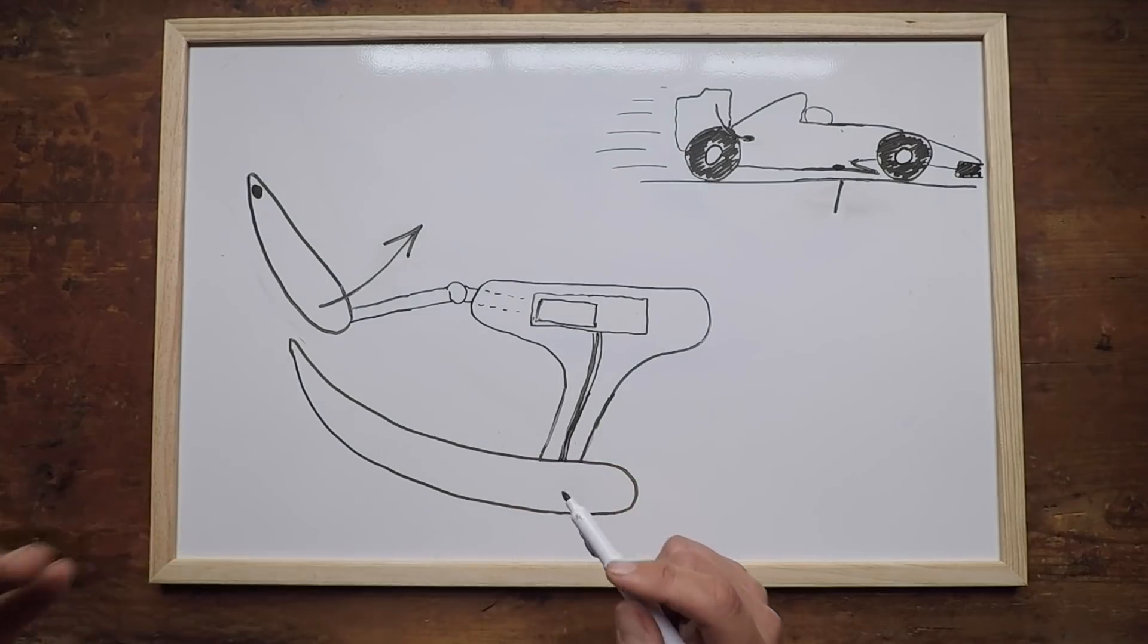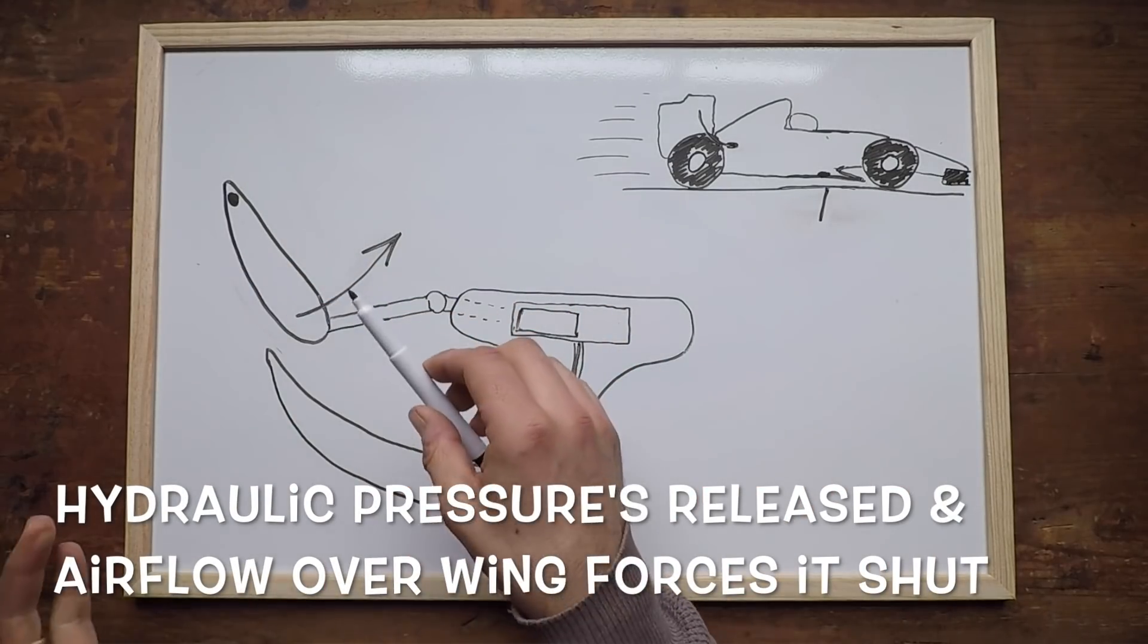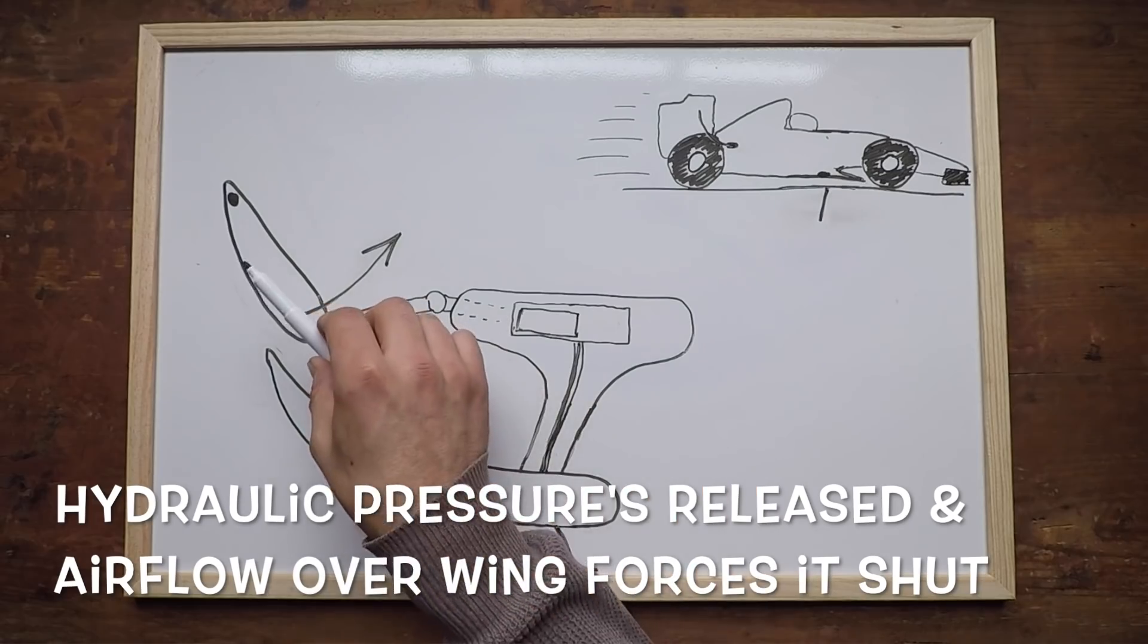Now, within the rules, it says the system has to be able to close automatically the second the driver hits the brake pedal as he approaches the corner. As he does that, the flap closes, reattaching the airflow within around half a second to the aerodynamic surfaces, bringing back all of that downforce.